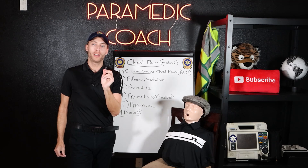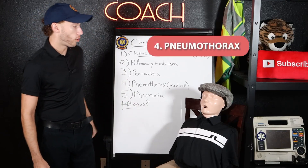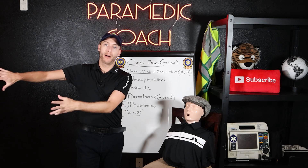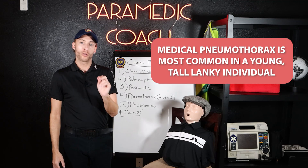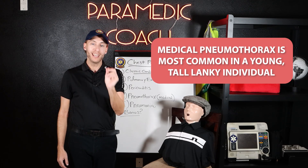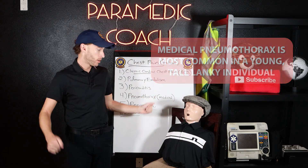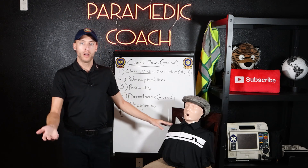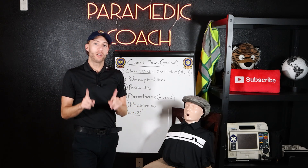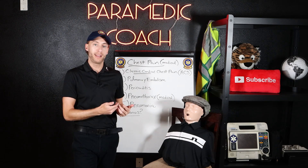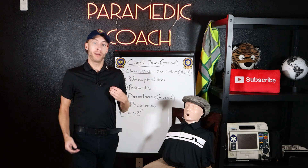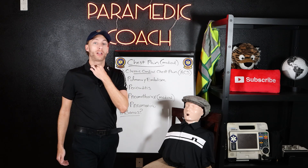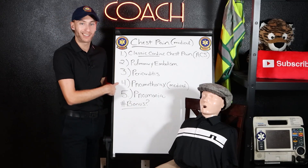We have two more pieces on chest pain. Next is medical pneumothorax. A traumatic pneumothorax comes from stabbings, shootings, or car accidents — that's different. A medical pneumothorax is most common in a young, tall, lanky individual. If someone is very tall, very skinny, and in their 20s, they could be at risk for a medical pneumothorax. That pain comes on sharp — you can't breathe. You'll have diminished breath sounds on one side, maybe clear on the other. If it's really bad: JVD and tracheal deviation — those are your signs of a medical pneumothorax that's getting worse.